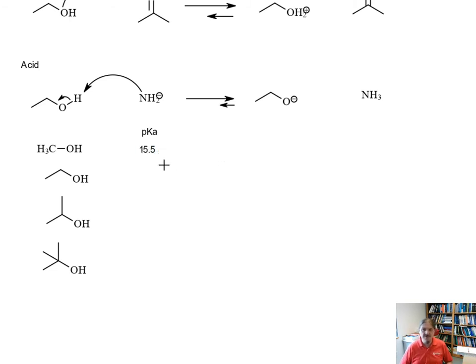So the pKa value of methanol is 15.5, a little bit less acidic than water. The pKa of ethanol is 16, the pKa of isopropanol is 16.5, and the pKa of tert-butyl alcohol is 18.